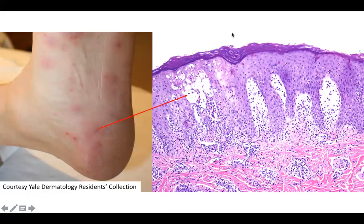Welcome back to DP60. Today we have a CPC of multiple vesicles that are oval and slightly purpuric on the feet as well as the hands of this adult patient.